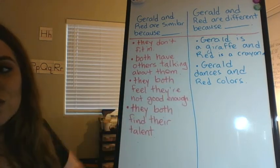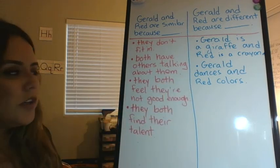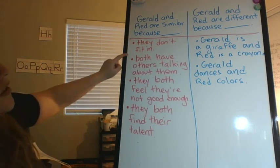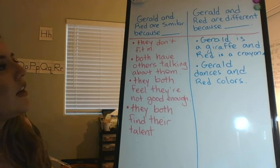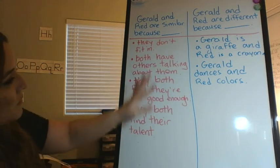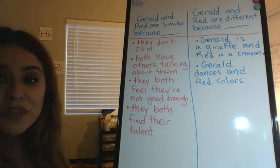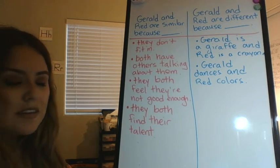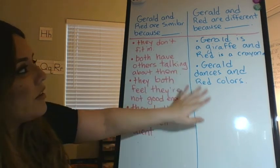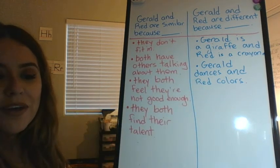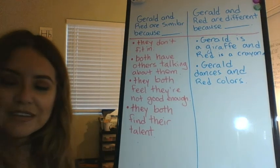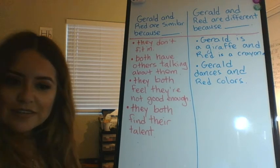You're going to use these for your journal writing today. You're going to pick one way that Gerald and Red are similar and one way that they're different. If you can come up with another one, that would be great — these are just some of them. So if you come up with another way that they're the same or different, go ahead and put that in your journal today. Good job! I hope you liked the story and I can't wait to see your journal.